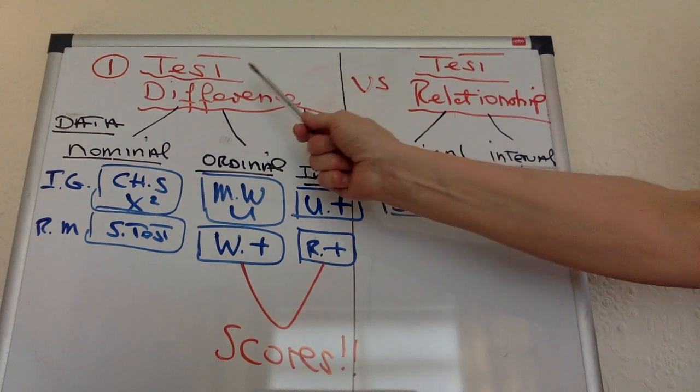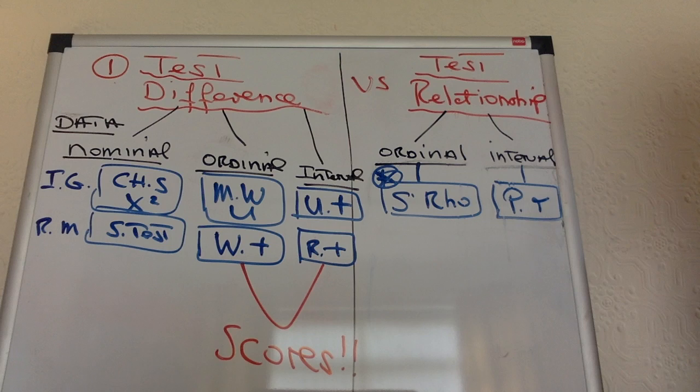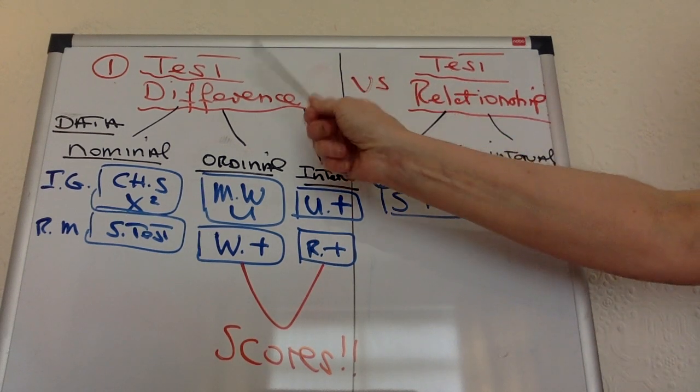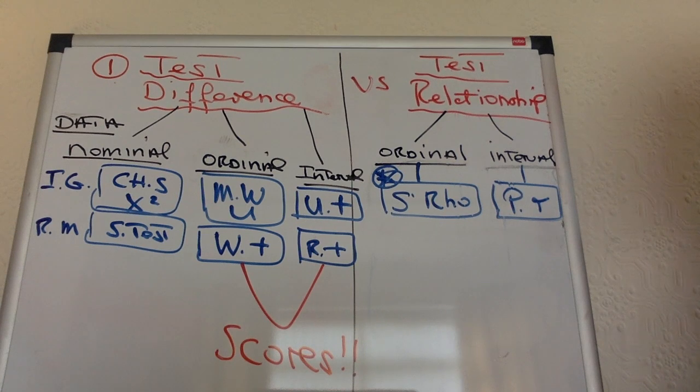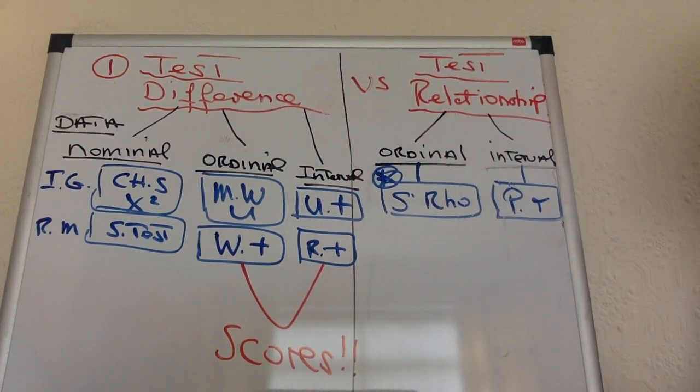Have you got a test of difference or a test of relationship? How do you find out? You read that scenario on the exam paper very carefully and look for these clues. If you've got different groups of people doing anything at all - an experiment, a field experiment, it doesn't matter - if you've got people into groups, you've got a test of difference between the groups.